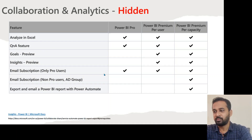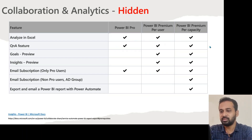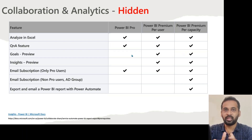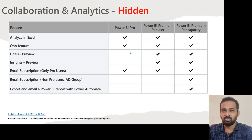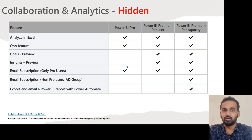Now the hidden features. Analyze in Excel is applicable to all license types. The Goals feature with Q&A is available for all, but the Goals feature itself is still in preview and is available only for Premium Per User and Premium Per Capacity. There are sample templates available if you log into app.powerbi.com, but you cannot develop that if you have a Pro license. Quick Insights, which was recently introduced, is also available only for PPU and Per Capacity, not for Power BI Pro.